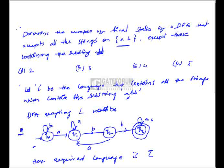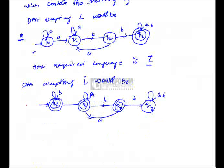But in the required language, strings should not contain the substring 'abb', so we have to complement DFA M to accept the required language L-complement. The DFA accepting L-complement would be M-dash. In order to complement the DFA, we have to interchange final and non-final states — making final states non-final and non-final states final. The resultant DFA will accept the complemented language.